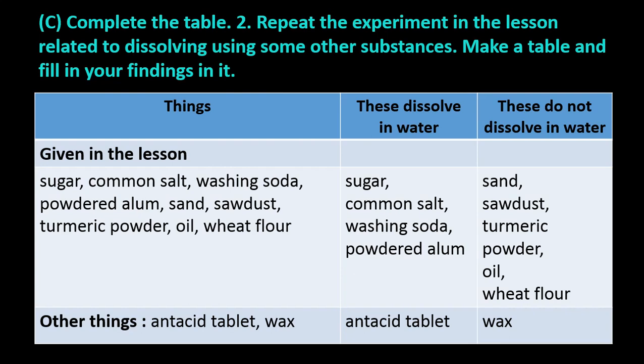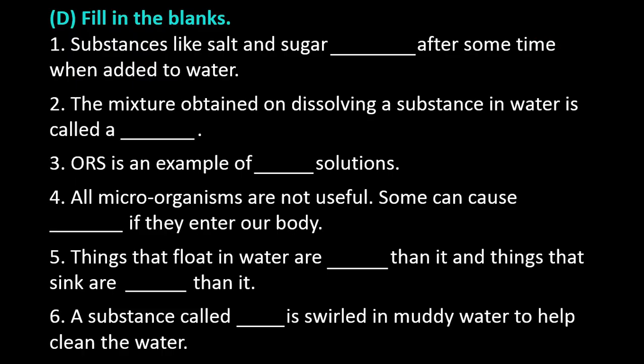Exercise question number D: Fill in the blanks. Question number 1: Substances like salt and sugar _____ after some time when added to water. Answer: Substances like salt and sugar dissolve after some time when added to water. Question number 2: The mixture obtained on dissolving a substance in water is called a _____. Answer: The mixture obtained on dissolving a substance in water is called a solution.